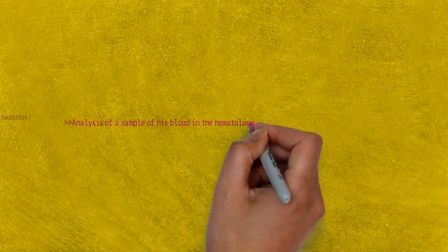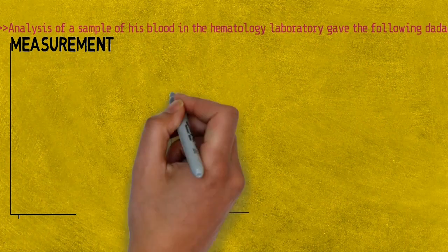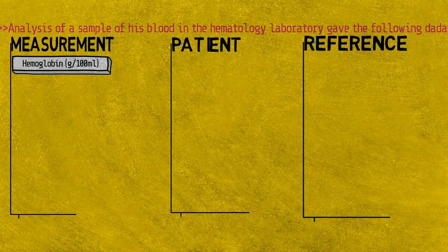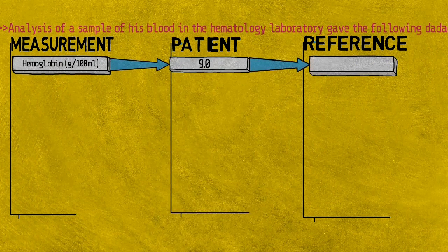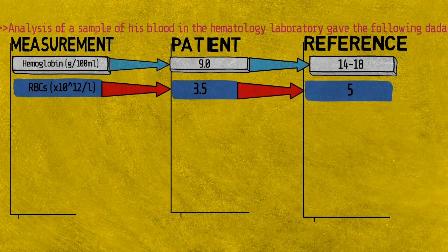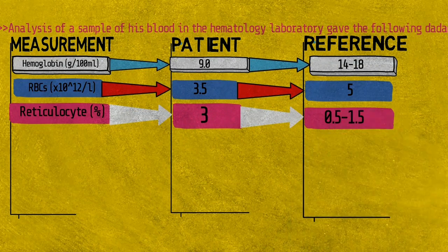Analysis of a blood sample in the hematology laboratory gave the following data. Hemoglobin was 9 (reference: 14–18) — low. Red blood cells were 3.5 (reference: 5) — low. Reticulocytes were 3 (reference: 0.5–1.5) — elevated.